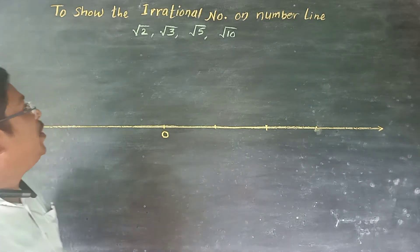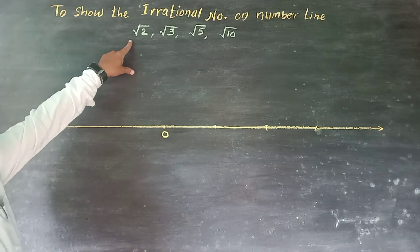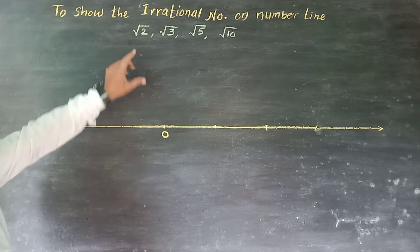Let's start the topic here. Root two, root three, root five, root ten - these are the irrational numbers.